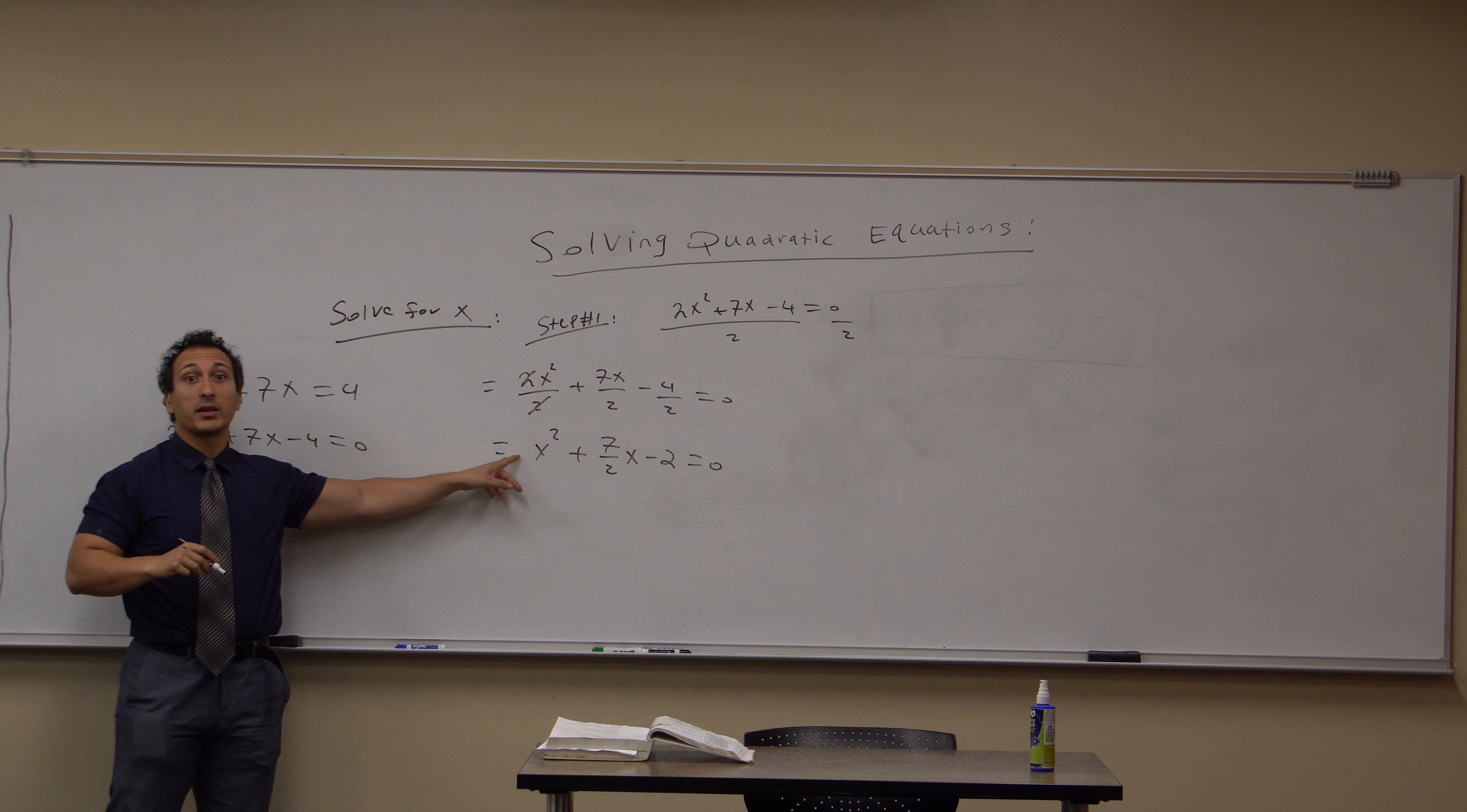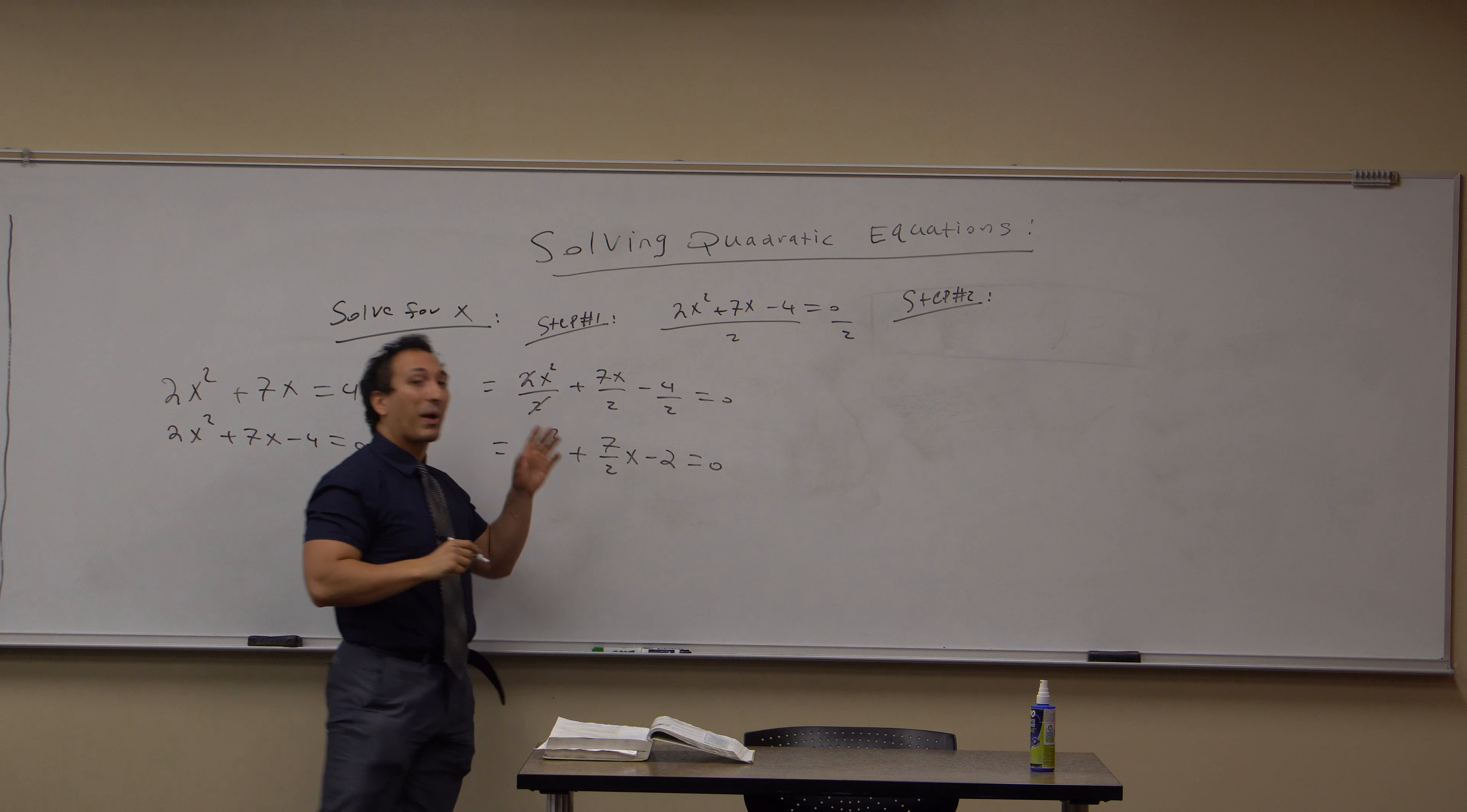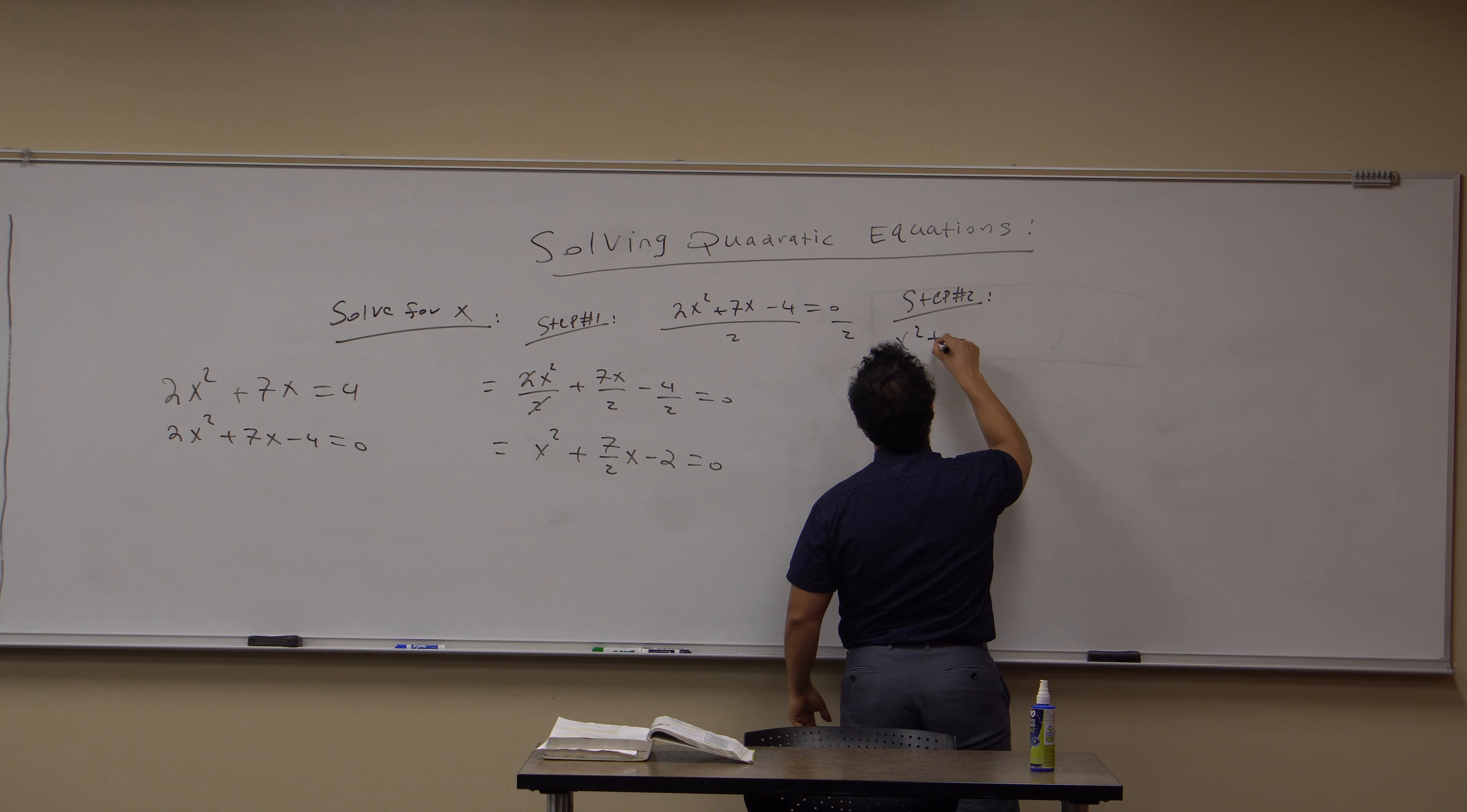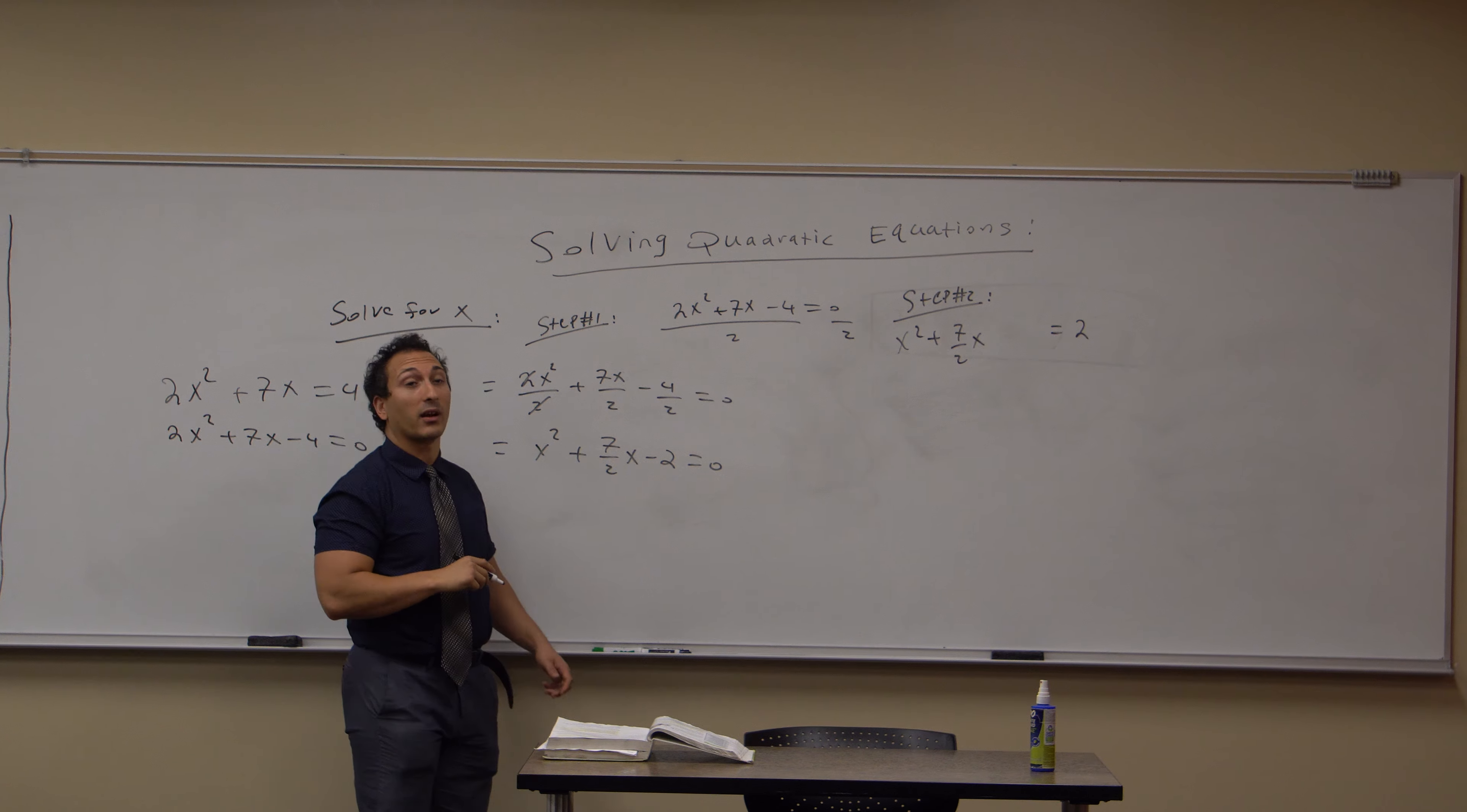Now we have the 1 here. Good. Step 2. We're going to send the constant term packing. By that I mean we're going to send it to the other side of the equation. I'm going to add 2 to both sides. So I get x² + 7/2x = 2. Now I'm going to suggestively leave a little space right here because we're going to be doing something there.